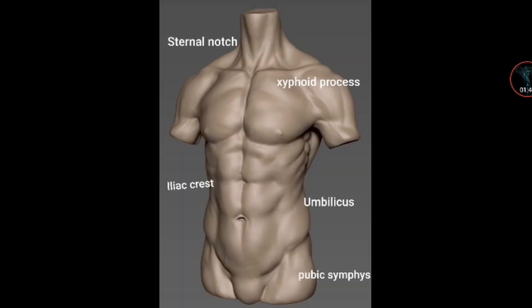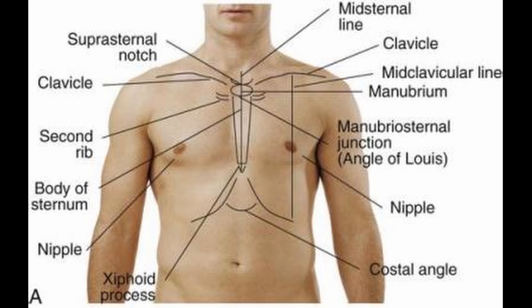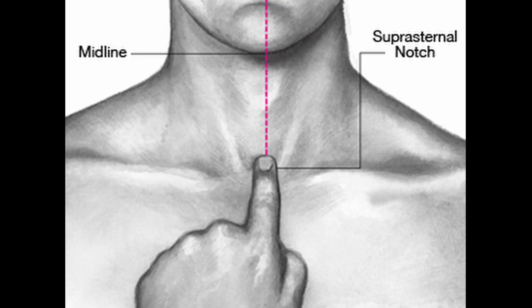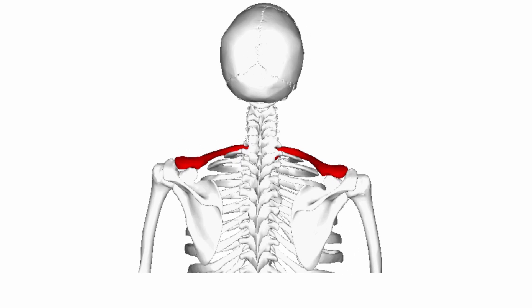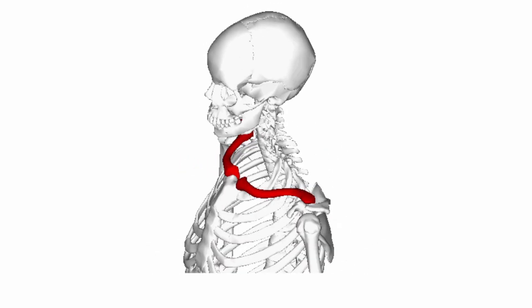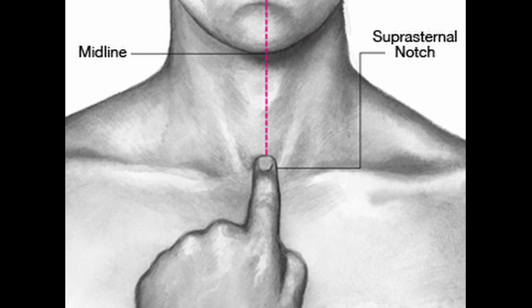Now take a look at the landmarks of the body. We start with the external notch, which is also known as the jugular notch or the sternal notch. It is the large visible dip in between the neck and the two collarbones — the clavicles. The dip between the two bones is known as the external notch, which is a really important landmark of the body.